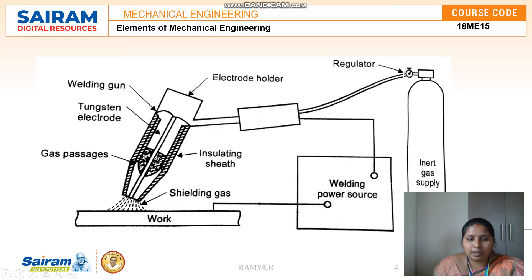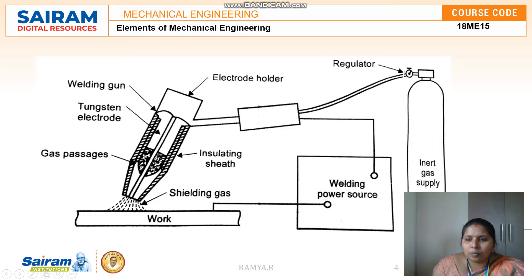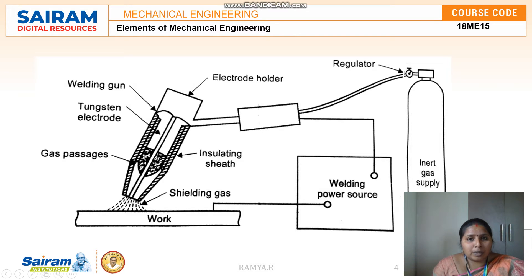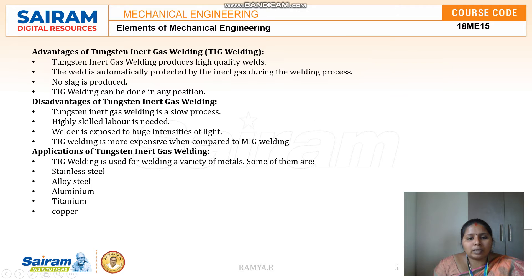In the TIG welding arrangement, there is an electrode holder and a welding gun connected to the inert gas supply. One end is connected to the power supply and another end to the inert gas supply. The inert gas is also sent through the electrode holder, which provides a gaseous shield to prevent chemical reactions at the surface. The work piece is connected to one end of the power source.